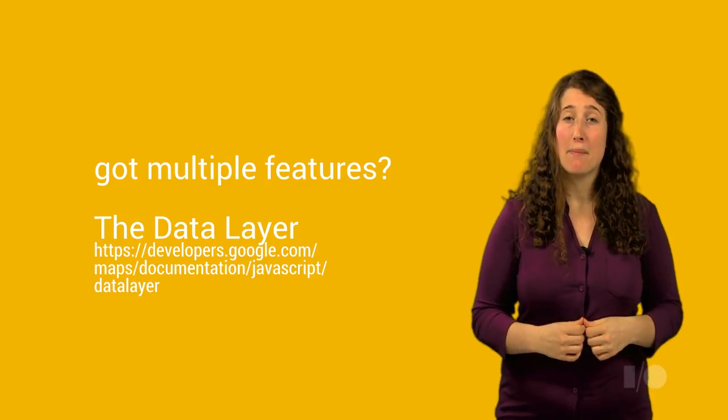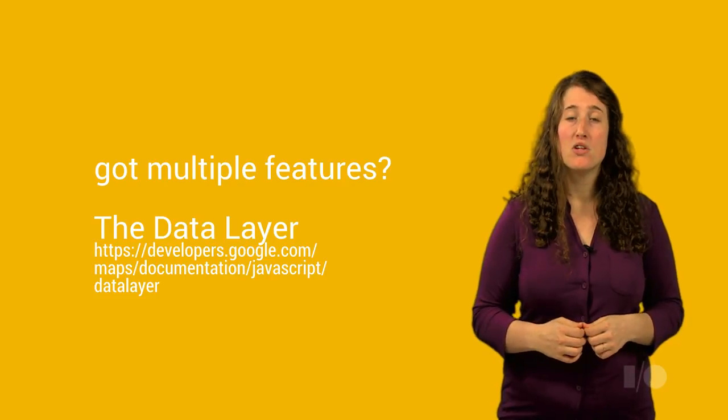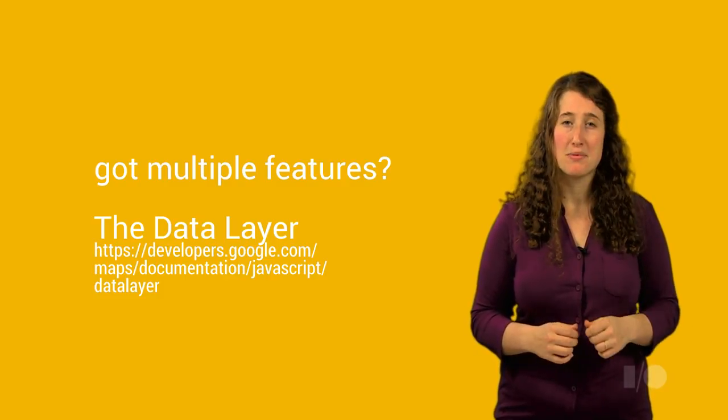A map is a great tool to help your users visualize the world around them. The Google Maps JavaScript API lets you craft and mold these maps, presenting your own data in beautiful and compelling ways. Maps can be used just to plot a single feature or a whole host of data. If you plan to include a map on your website to display more than a single feature at a time, then you might be very interested in using the data layer in the JavaScript Maps API.